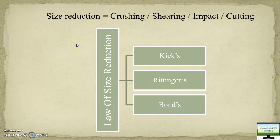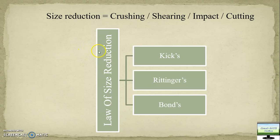Crushing and shearing happens in the case of sugar cane. Sugar cane is crushed under two rollers and shearing also happens. One important term here is 'ground material.' What is ground material? In Hindi, you would say 'pisa hua' — for example, when wheat is converted into aata, that aata is known as ground material — the pisa hua form of material.